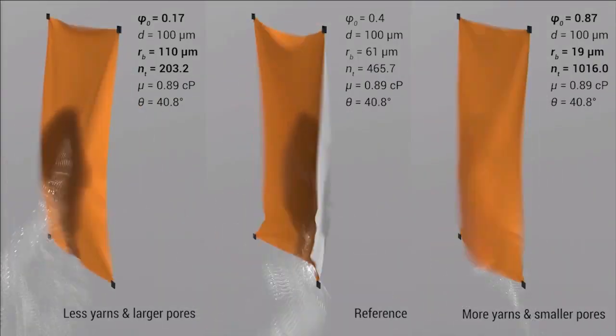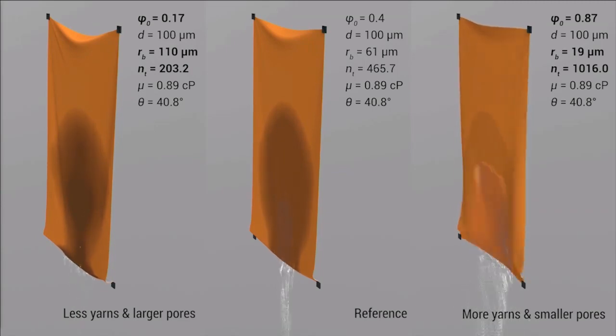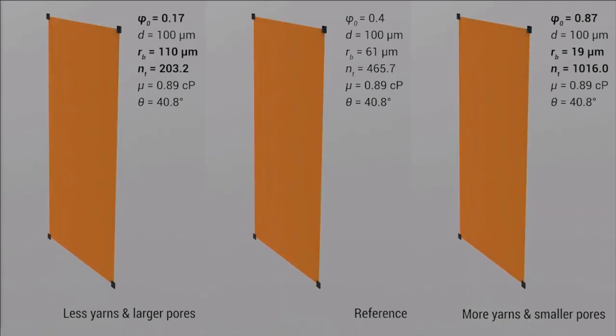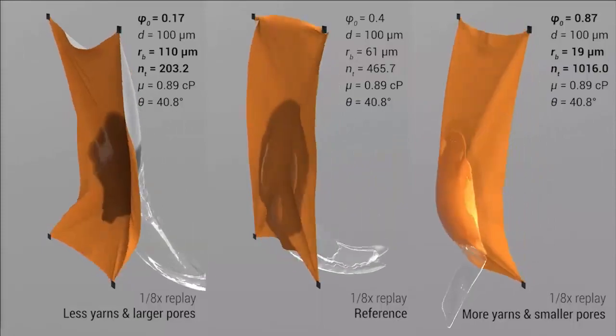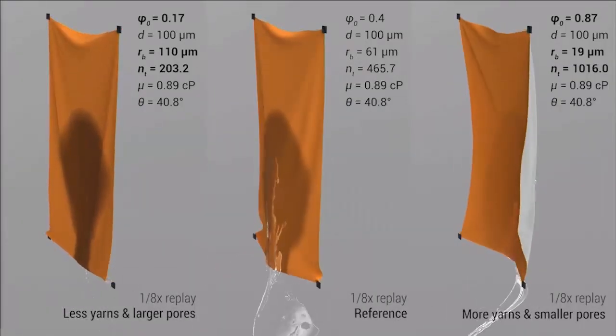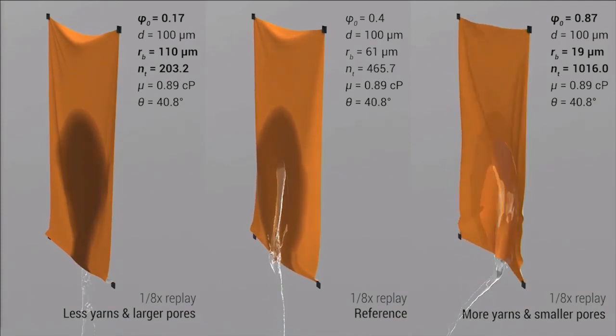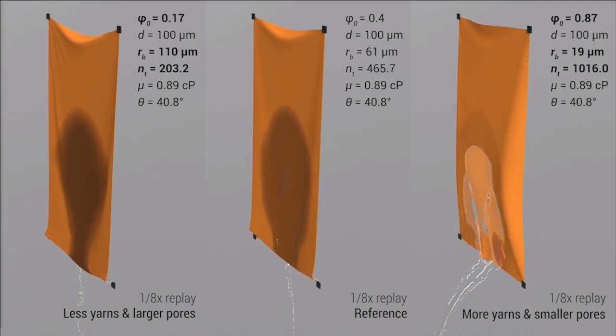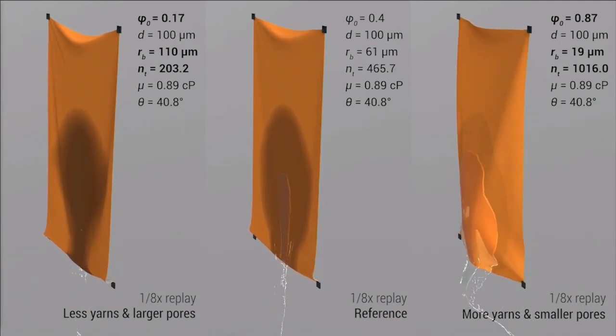More than just one kind of cloth, we can simulate wet cloth with a wide range of parameters. Here we show from left to right, the number of threads is increased. Fabrics with higher number of threads are less possible to be soaked by water and can become dried more easily since less water can stay there.